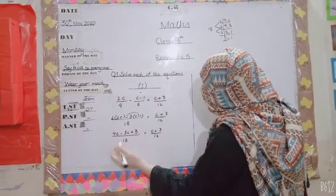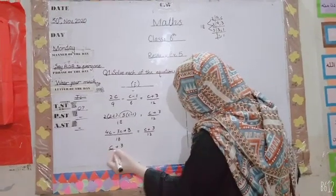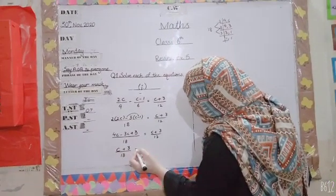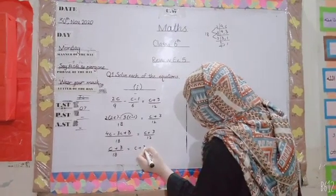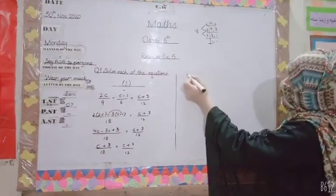Simplifying the left side: 4c minus 3c makes c, plus 3, giving c plus 3 divided by 18 equals c plus 3 divided by 12. Now we'll use cross multiplication.